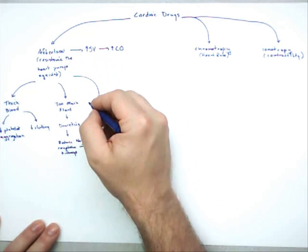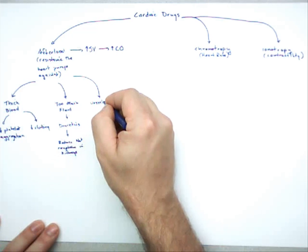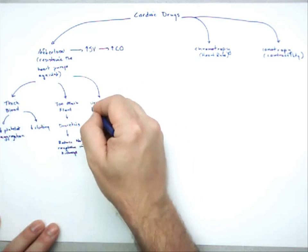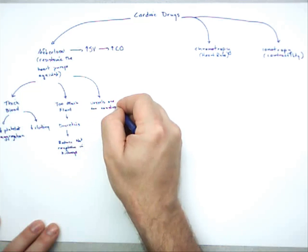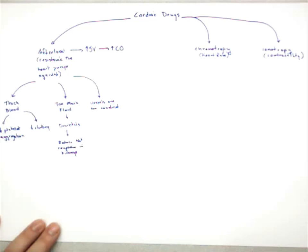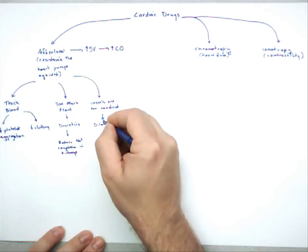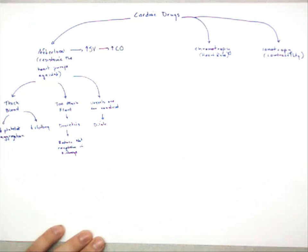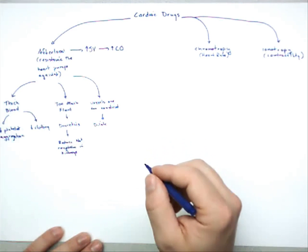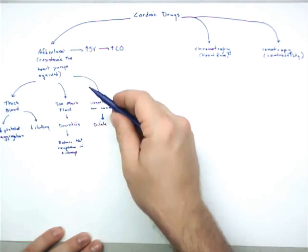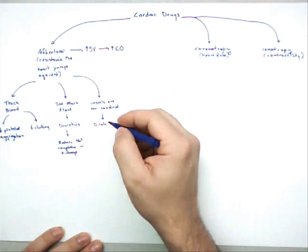Another thing that can happen to increase afterload is blood vessels being too constricted. Vessels can dilate and constrict. One way to decrease afterload is to make blood vessels larger, which decreases the resistance of blood flowing through them. If we dilate vessels, we can make it easier for blood to flow — just like you'd want a nice big wide-open hose versus a small one to move a lot of water.